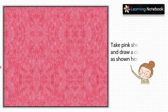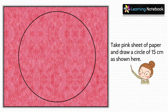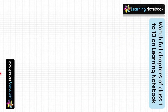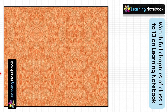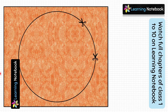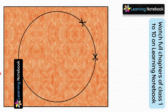In the first step, take a pink sheet of paper and draw a circle of radius 15 centimeters on it as shown. Next, take an orange colored sheet and draw a circle of the same size — radius 15 centimeters — and cut out this circle.